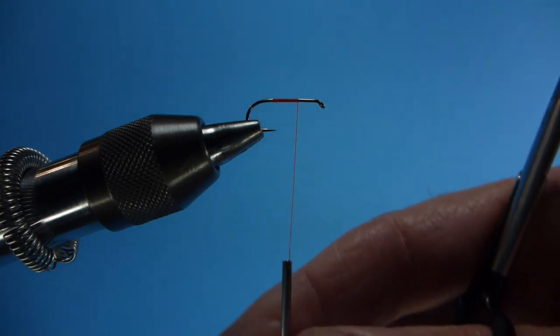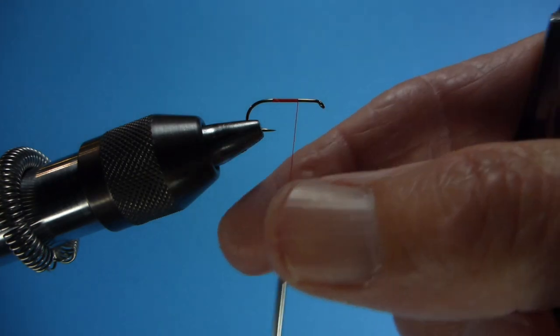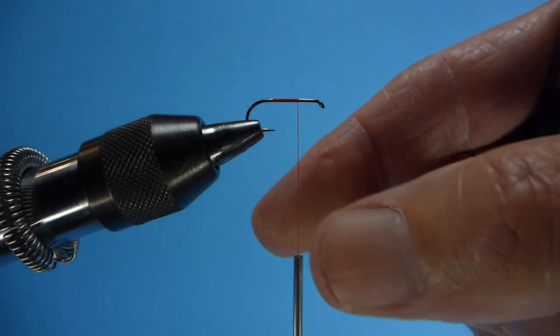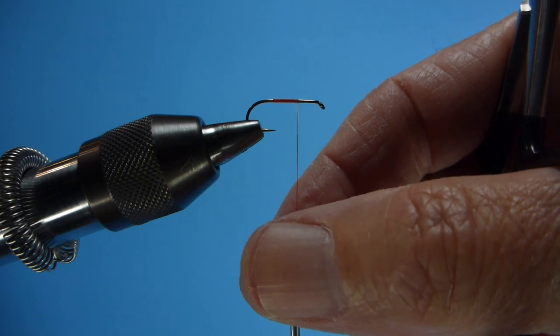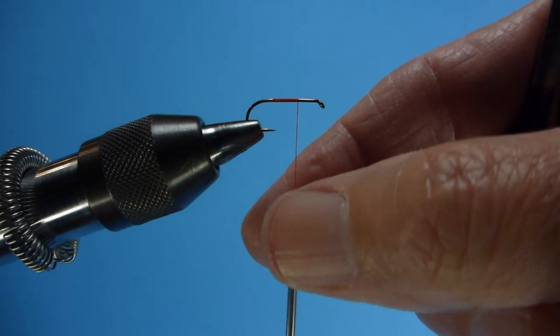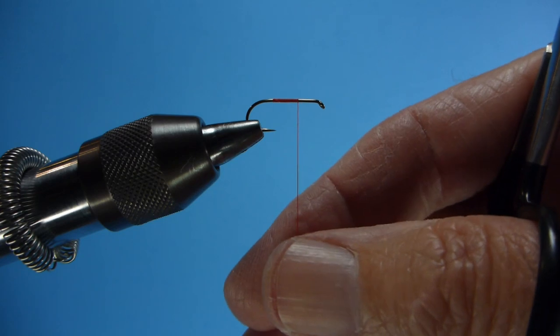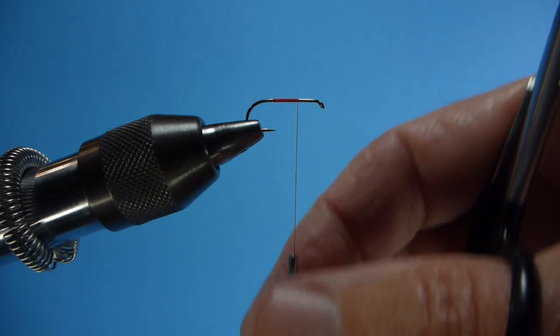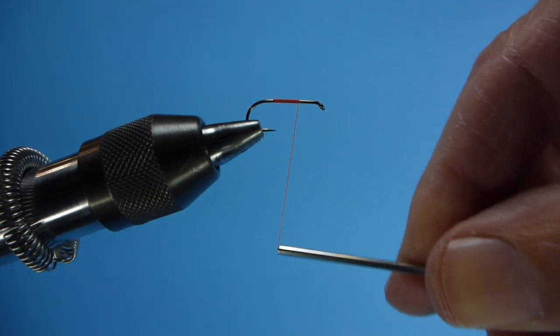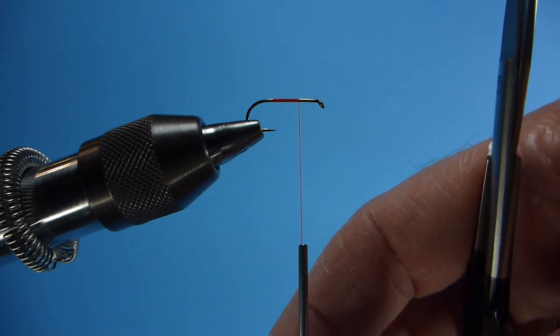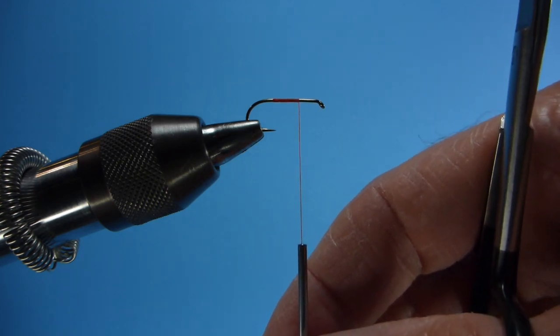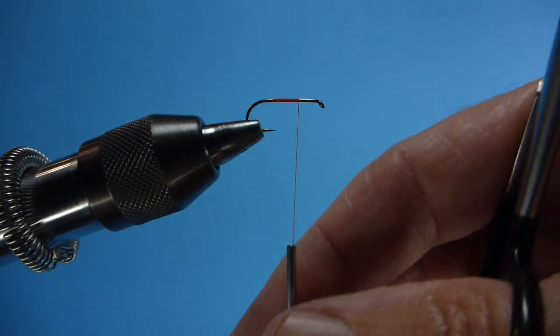As I've wound forward, I've put a clockwise twist in the thread. In other words, as I spin the bobbin holder in this direction, that is a clockwise twist. When I spin the bobbin holder in this direction, it's a counterclockwise twist. When I wind it around the shank of the hook in the conventional direction, that is putting on a clockwise twist for a right-hand fly tyer winding in the conventional direction.